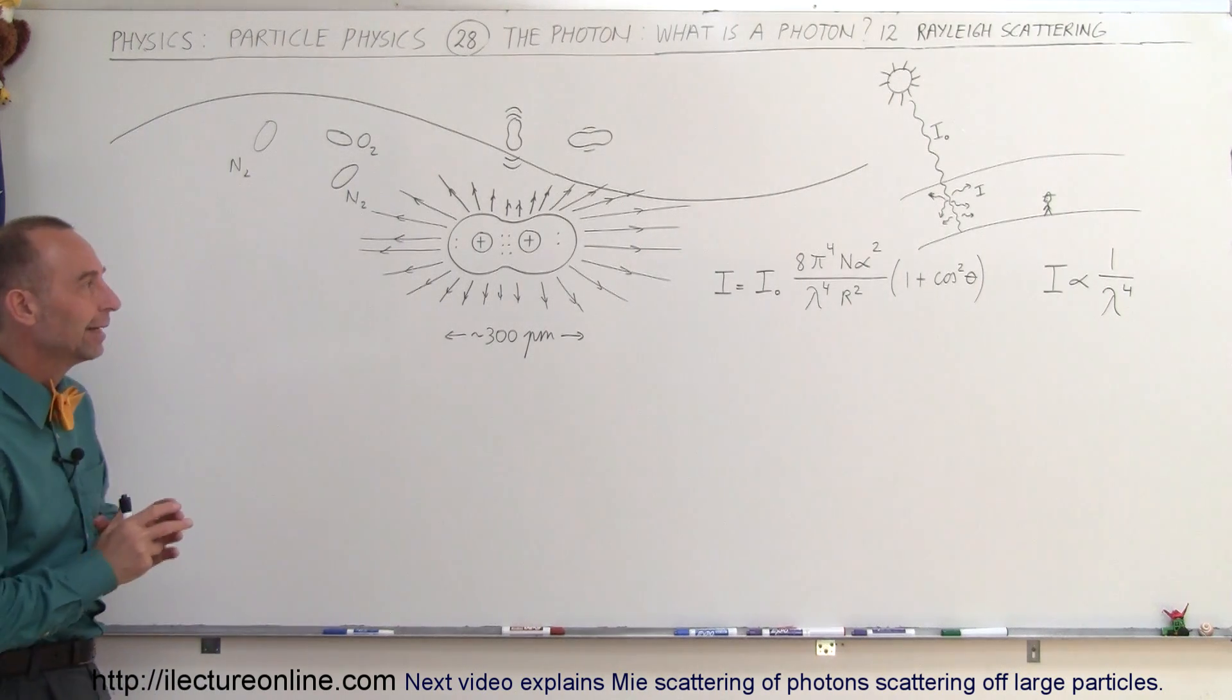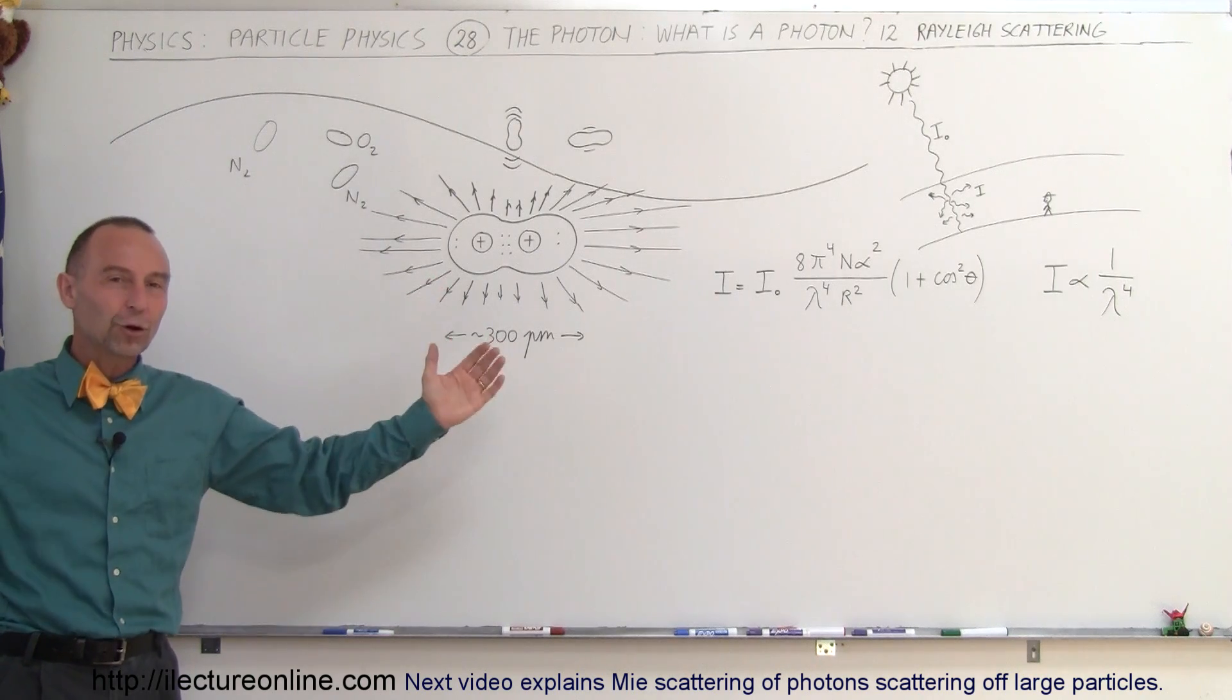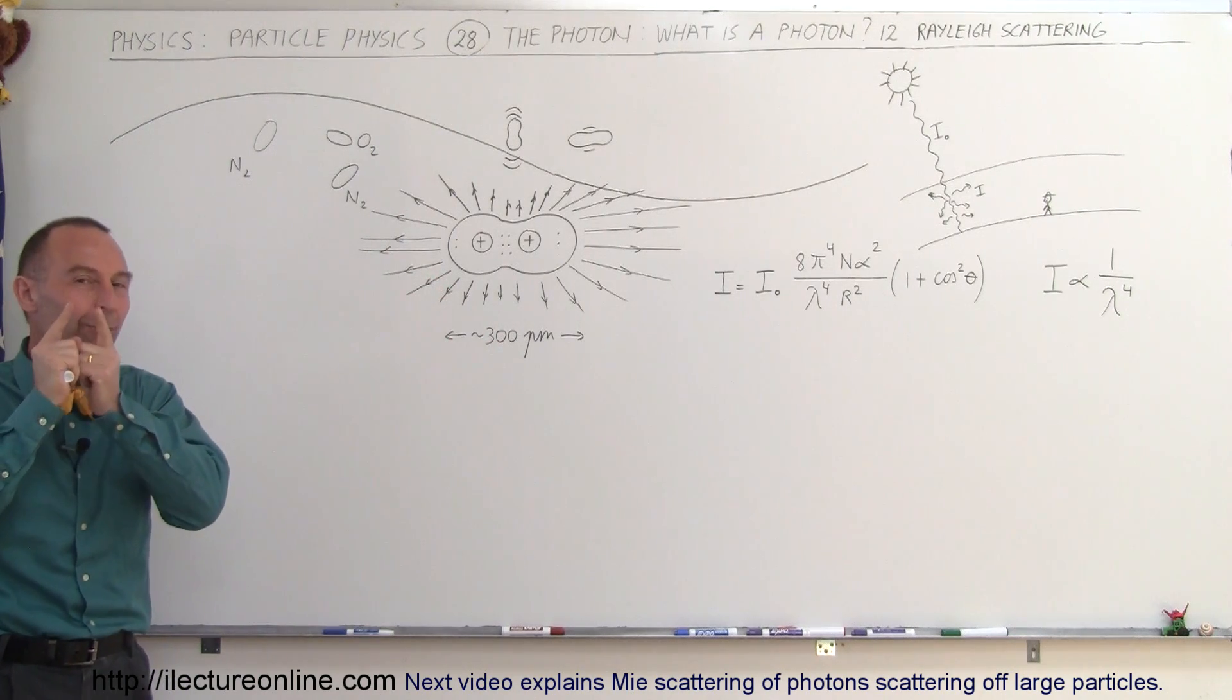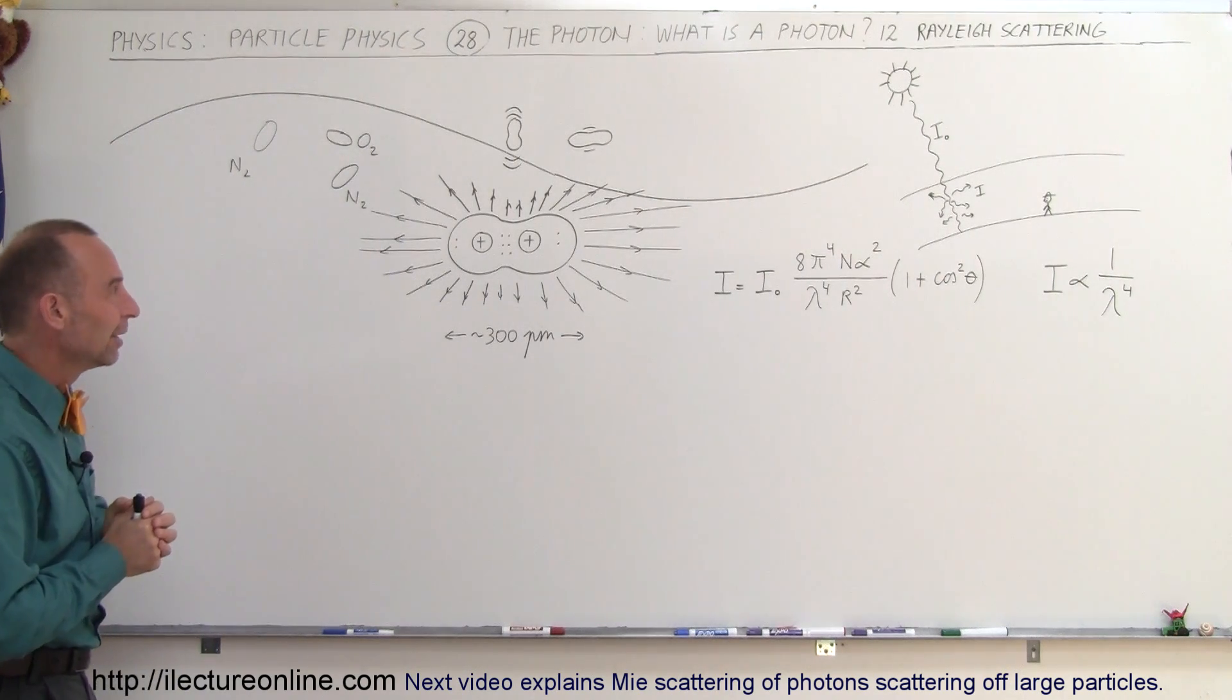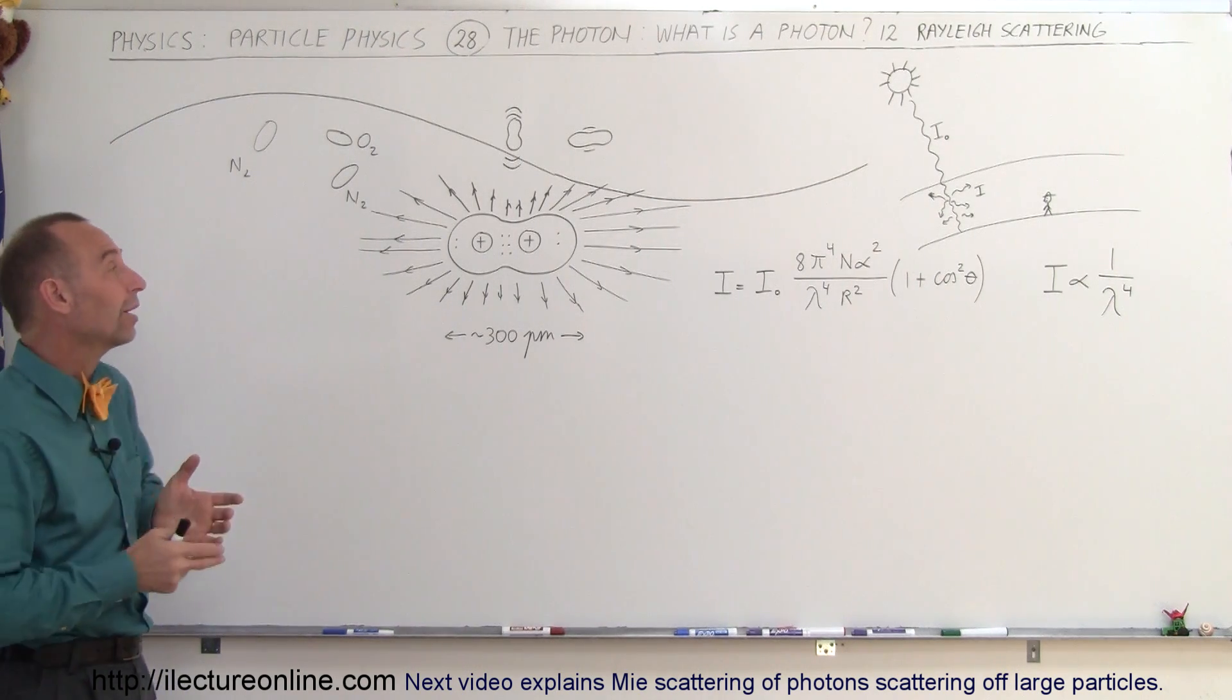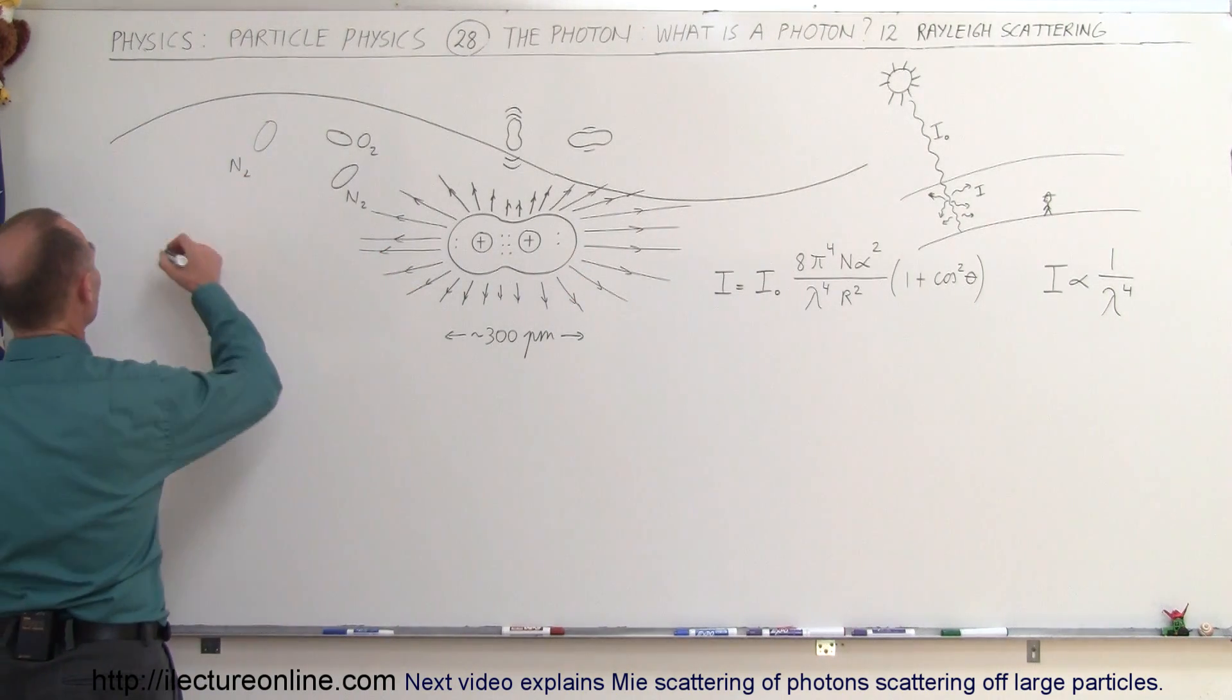One of them is what we call Rayleigh scattering. Rayleigh scattering is where sunlight, where we have relatively large photons, scatters over very small particles called the nitrogen and oxygen molecules in the air. In relationship size-wise, imagine that sunlight has a wavelength of 500 nanometers on average.